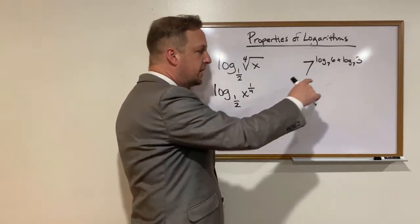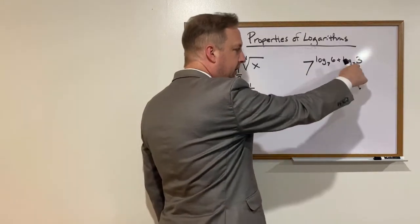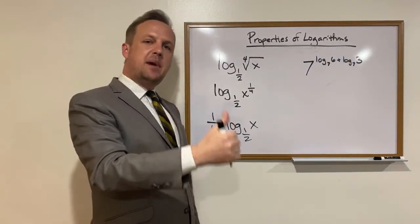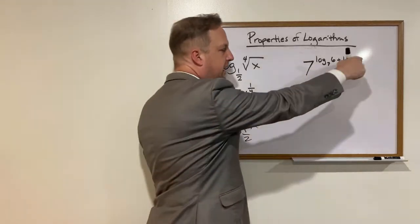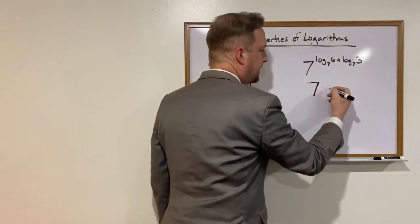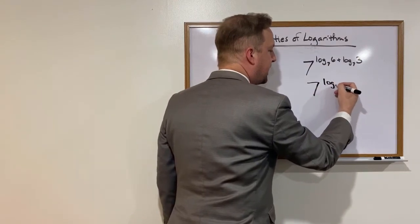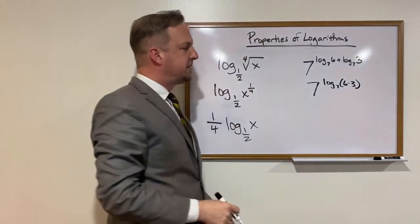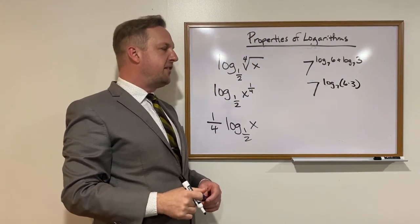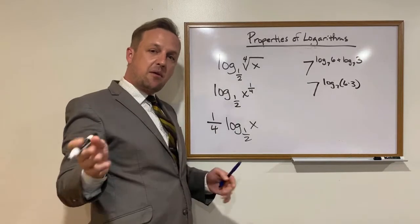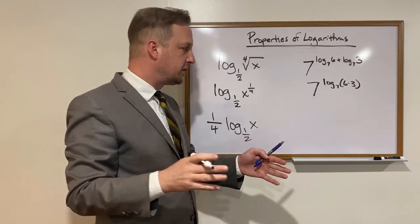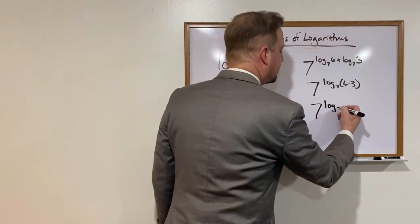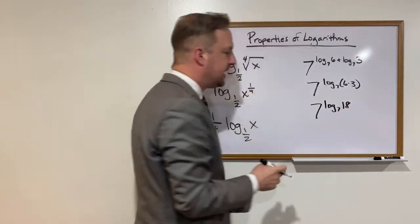Hopefully you thought to yourself product rule and you'd be right. Only this is in reverse. So you can see we're adding these two logs together, but they have the same base. So thinking about the product rule in reverse, we can start the first step in simplifying this. So hopefully everybody will get that this is the same thing as 7 raised to the log base 7 of 6 times 3. So hopefully everybody will then see that that gives us 7 to the log base 7 of 18.